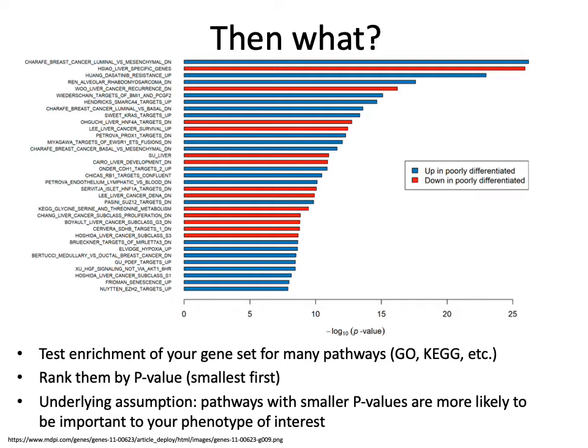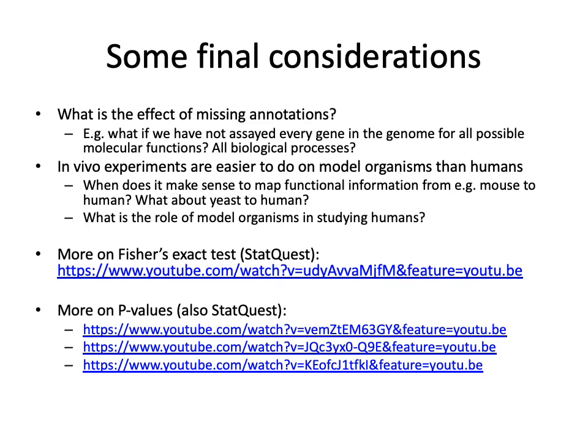The general assumption underlying gene enrichment analyses is that pathways with smaller p-values — those at the top of the list — tend to be more likely to be important to your phenotype of interest and are worth following up on, as opposed to pathways at the bottom of the list with very large p-values where the result is not surprising. That's the general concept behind gene set enrichment.